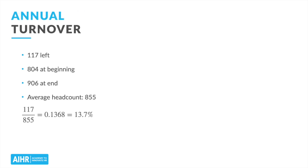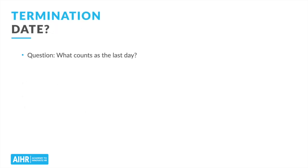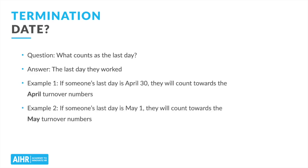One final example: annual turnover. Same formula, just a different time period. In this example, 117 people left over the course of the year. Let's suppose there were 804 employed as of January 1st and 906 as of December 31st. Plugging these values into our formula, we get 13.7% as our turnover rate for the whole year. One question that often pops up is: what counts as the last day? The date of termination is typically the last day they worked, and this is what you should be using in your calculation. So if we're calculating the turnover rate for April and the person's last day was April 30th, this is also the date of termination — the last day for which they were paid — and this person should count towards the April turnover numbers.